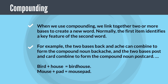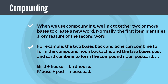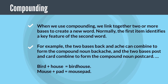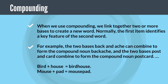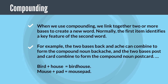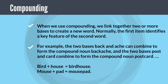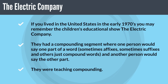When we use compounding, we link together two or more bases to create a new word. Normally the first item identifies a key feature of the second word. For example, the two bases 'back' and 'ache' combine to form the compound noun 'backache,' and the two bases 'post' and 'card' combine to form the compound noun 'postcard.' Further examples: bird + house = birdhouse; mouse + pad = mousepad.